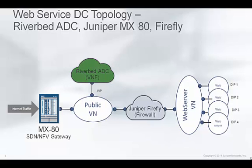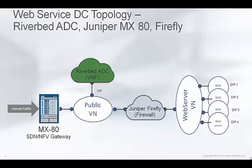To implement this configuration, we've created two virtual networks on the overlay. One is the public network, where the HTTP traffic destined for the VIP address is routed to the MX gateway. The Riverbed ADC is connected to this public network in a single-arm mode. The ADC receives traffic, selects a web server, performs the load balancing function, and sends traffic back into the public network.